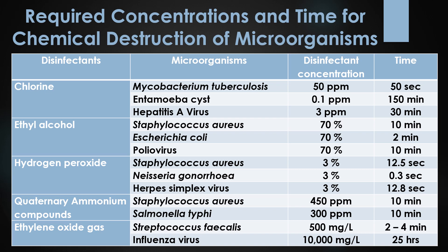The next disinfectant is quaternary ammonium compounds. 450 ppm is required for the destruction of Staphylococcus aureus, taking 10 minutes. 300 ppm is required for the destruction of Salmonella typhi, also taking 10 minutes.